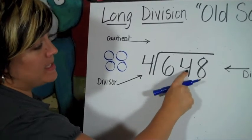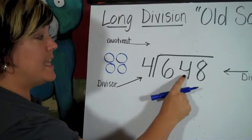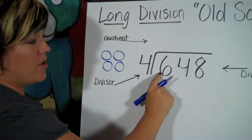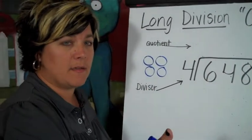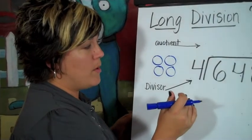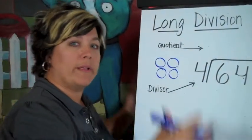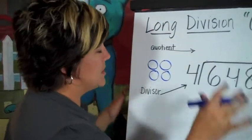It takes ten pennies to make one dime. It takes ten dimes to make one dollar. And so our whole system is a base ten system, which is where we get all of the borrowing and carrying and all the stuff that we do. So let's go on with this problem.